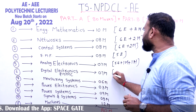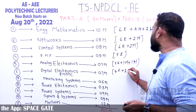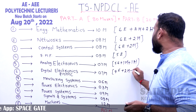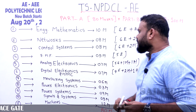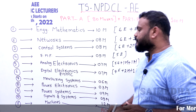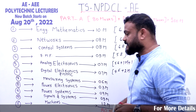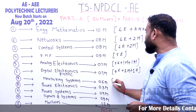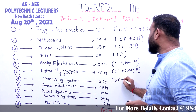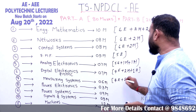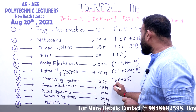In Digital Electronics, 4 questions are easy, 2 questions are moderate, and 1 question is a little tough. As per Measuring Instruments, which carries 6 marks, 4 questions are easy and 2 questions are moderate.